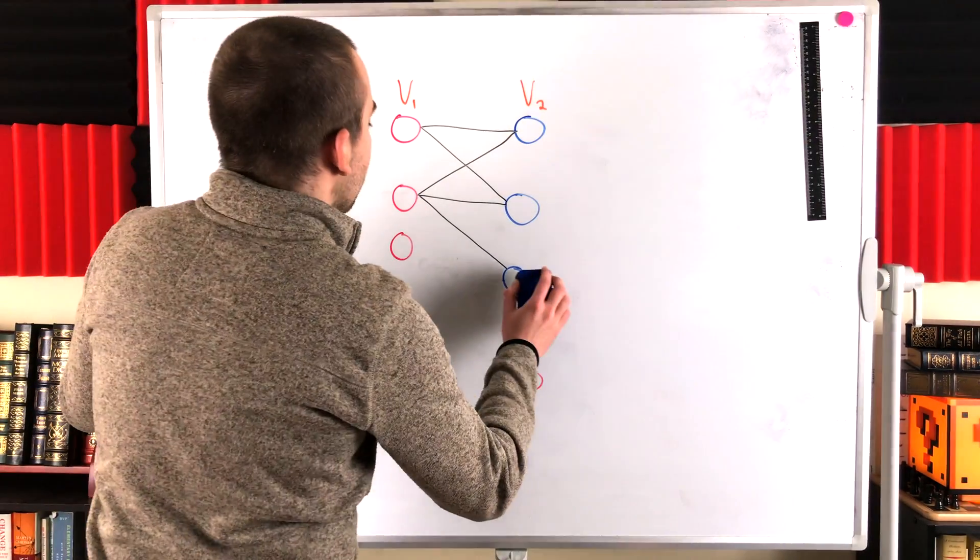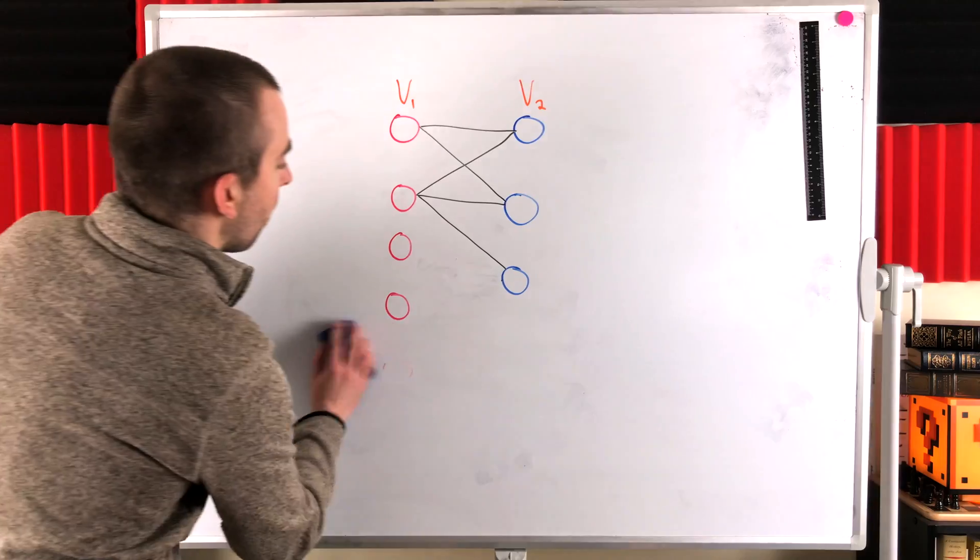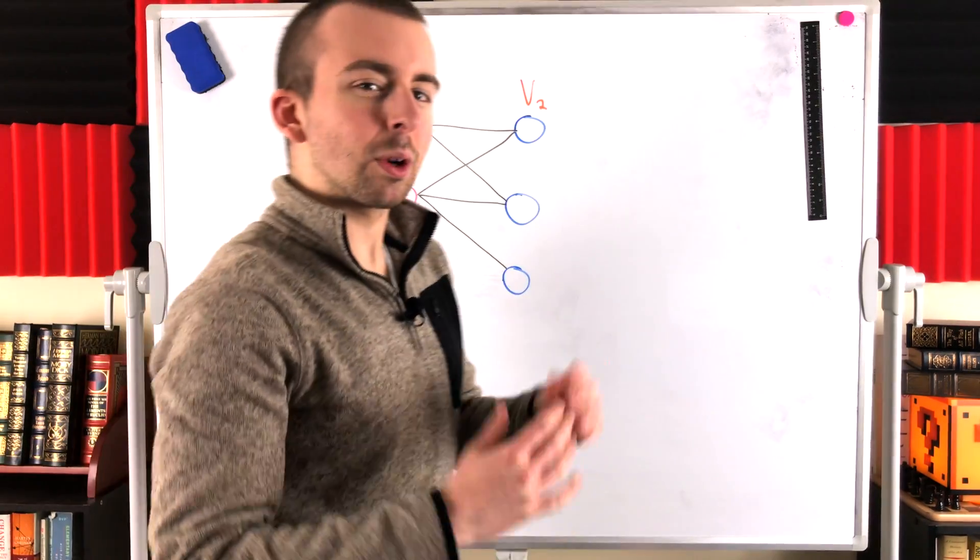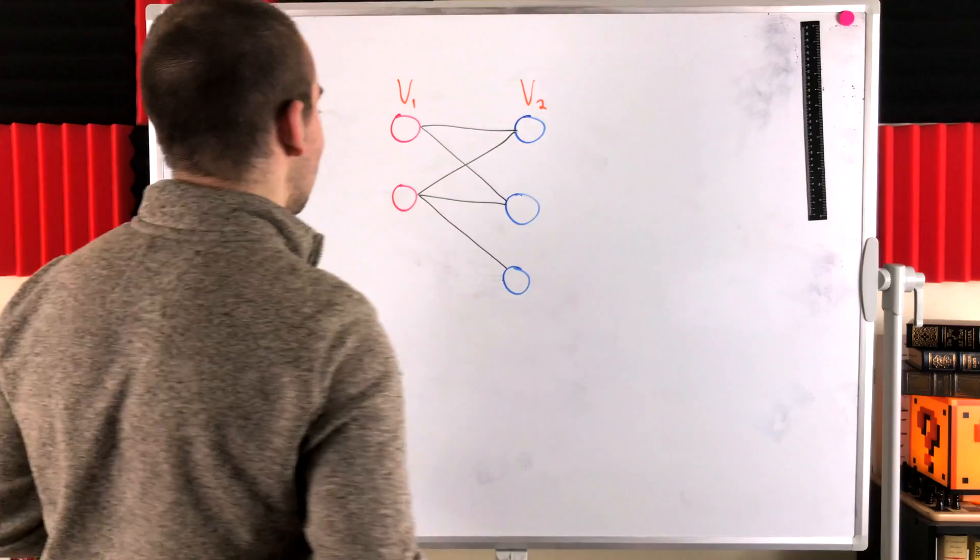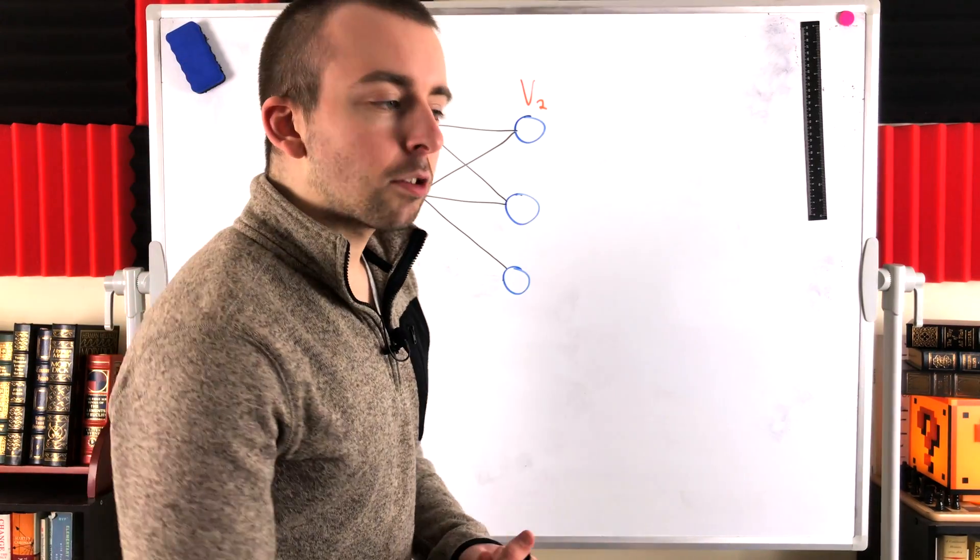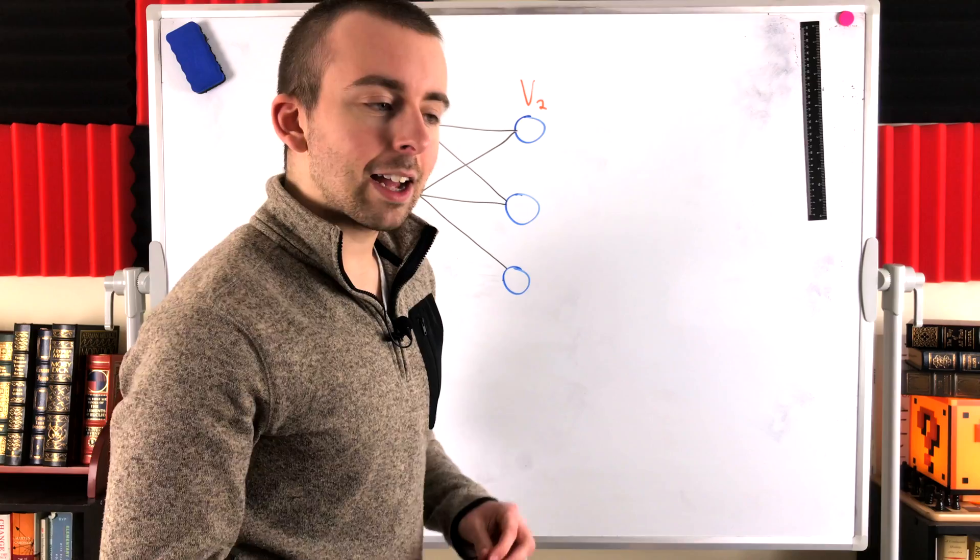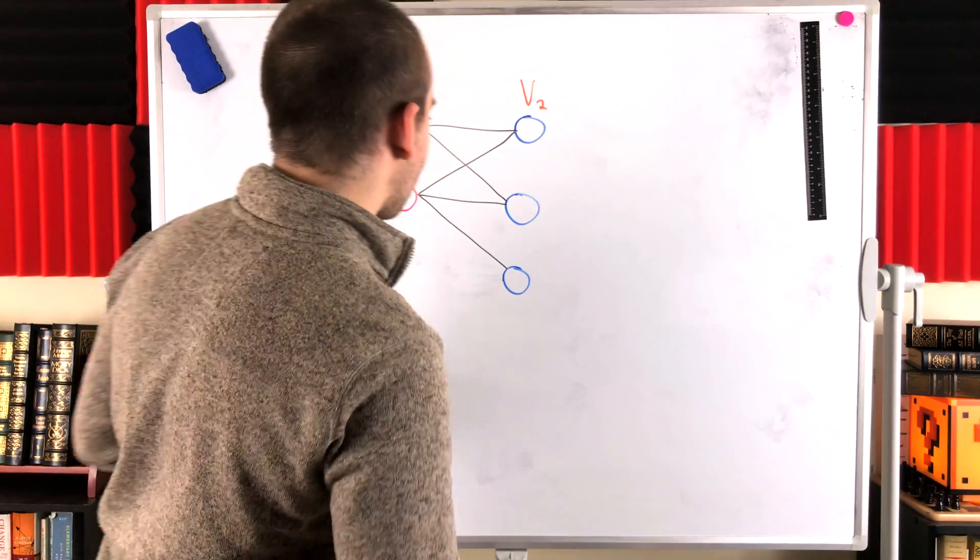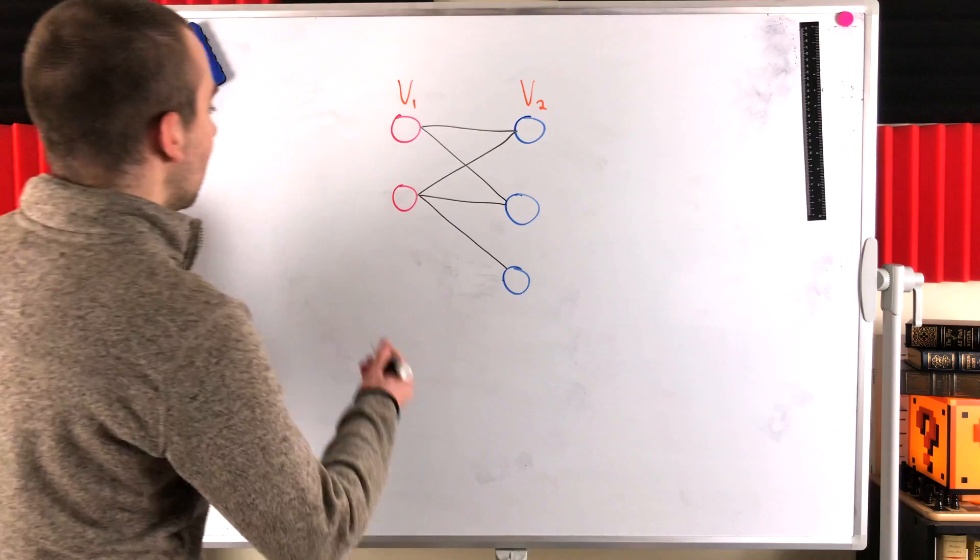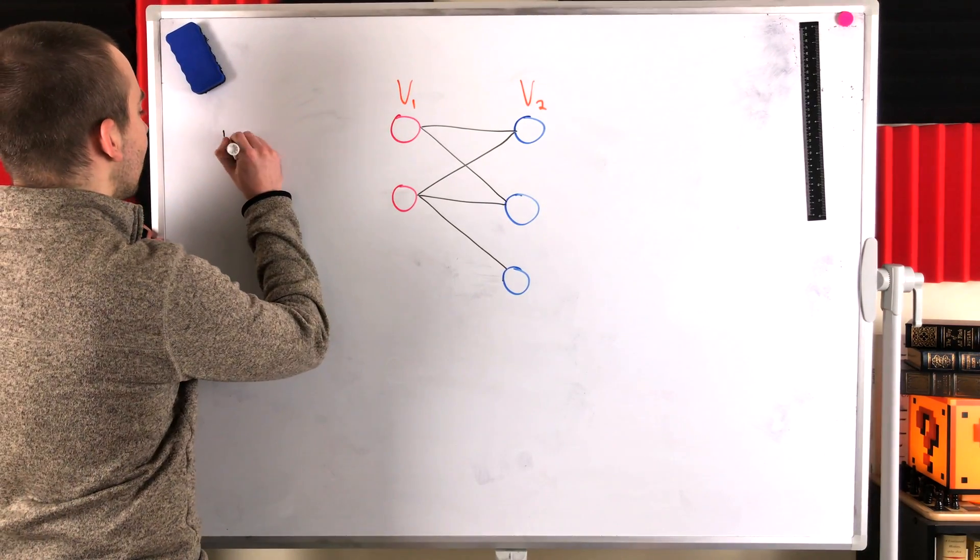So then what if we talk about complete bipartite graphs? They have more strict requirements. So can we still have isolated vertices in complete bipartite graphs? Remember, a complete bipartite graph is just a bipartite graph with every possible edge. So in this graph here, for example,